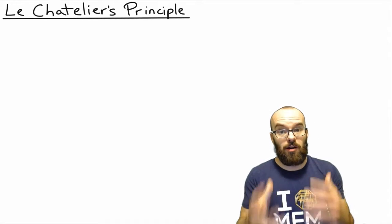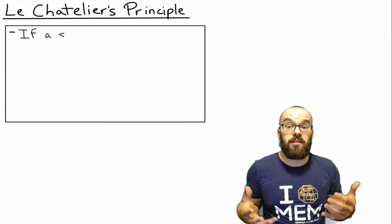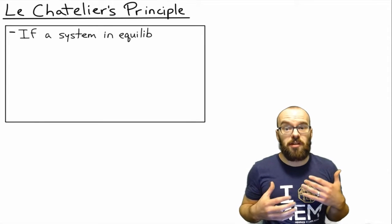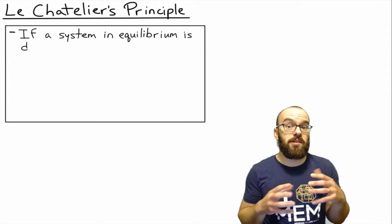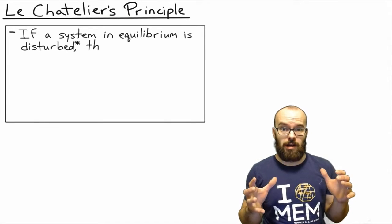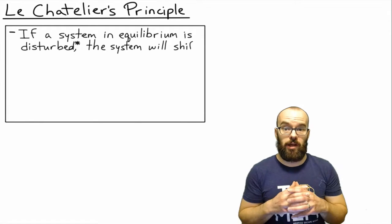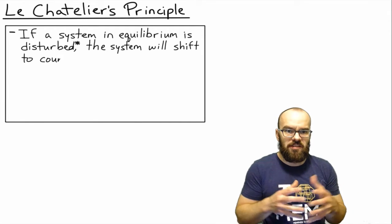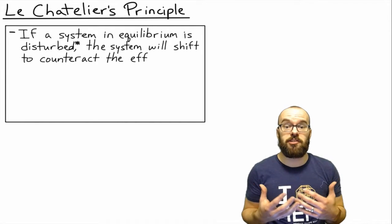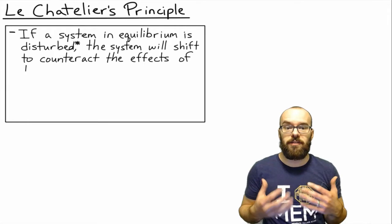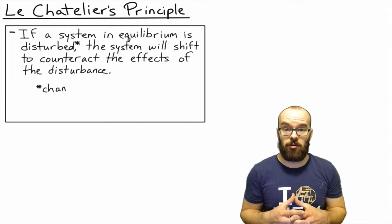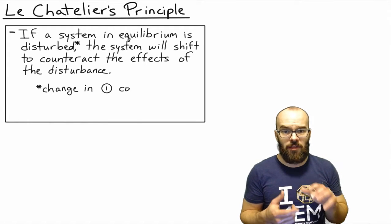So what is Le Chatelier's principle? Essentially it's a way to predict what's going to happen to an equilibrium reaction if you disturb it in some way. It says this: if the system at equilibrium is disturbed, the system will shift to counteract the effects of the disturbance.